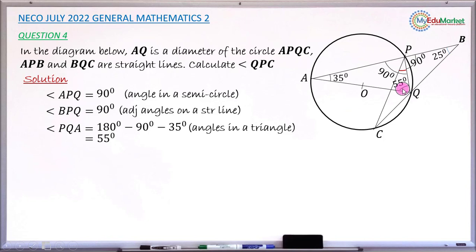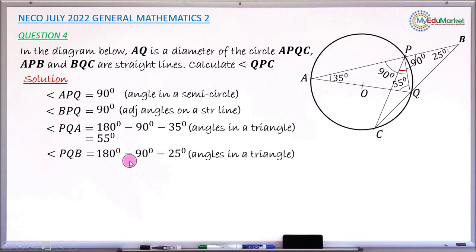I still don't have enough to find angle QPC, so let me find angle PQB. Looking at this triangle, I have angles 90 and 25. Using the sum of angles in a triangle: 180 minus 90 minus 25 gives angle PQB equals 65 degrees. I mark it on the diagram.